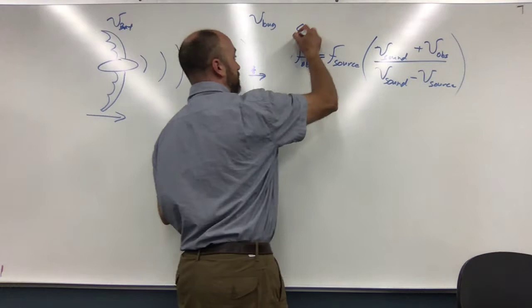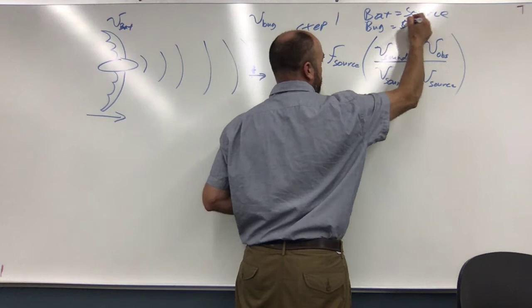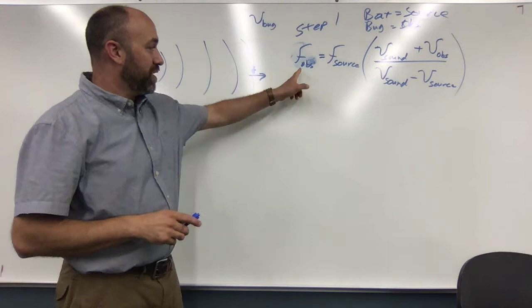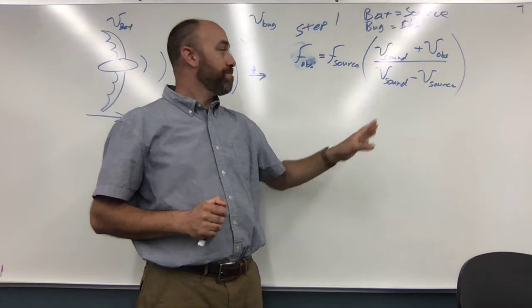Okay, so for step one, bat is the source and bug is the observer. And you can use this to find the frequency observed by the bug. Now the problem is you won't know all these variables. You'll just have to plug in what you do know.